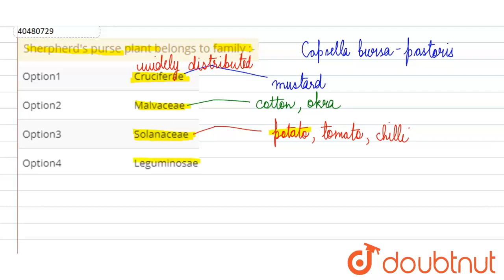After that, we have given Leguminosae. For this, commonly we use Fabaceae. These are all leguminous plants. Economically, this family is very important because there are pulses - chana, moong, arhar. These are all members of this family.